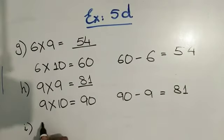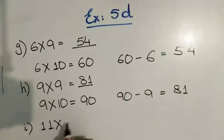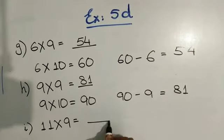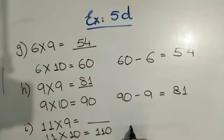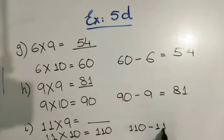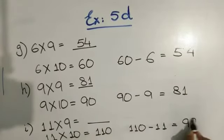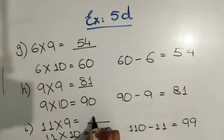Next question. 11 multiplied by 9 is equal to what? So we will multiply 11 into 10, we will get 110. Now 110 minus 11, we will get 99. So 11 nines are 99.